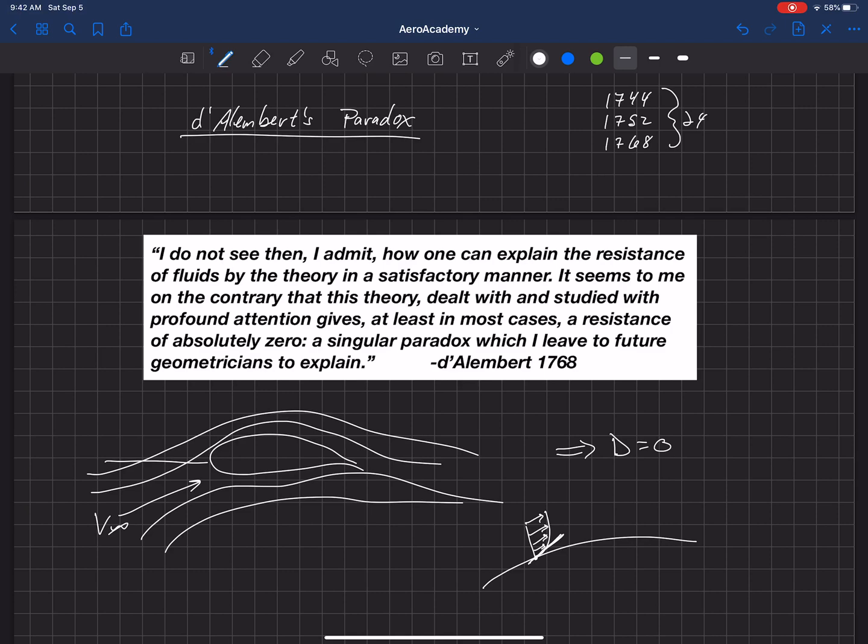that is the only drag component for a two-dimensional cross-section. Inviscid theory, or potential flow theory, says that the drag is actually exactly zero. And remember, we dropped out the boundary layer effects in the development of potential flow theory here.